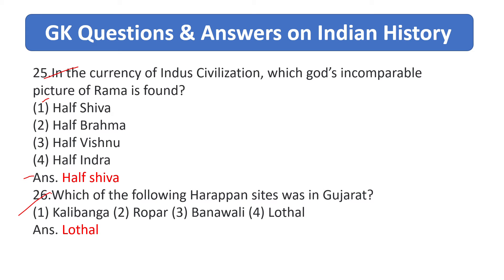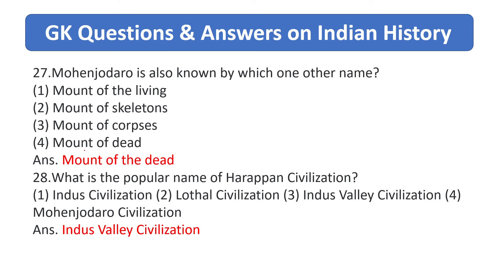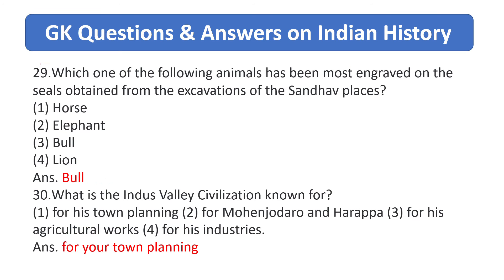Which of the following Harappan sites was in Gujarat? Answer is Lothal. Mohenjo-daro is also known by which other name? Answer is 'Mount of the Dead.' What is the popular name of Harappan civilization? Answer is Indus Valley civilization.